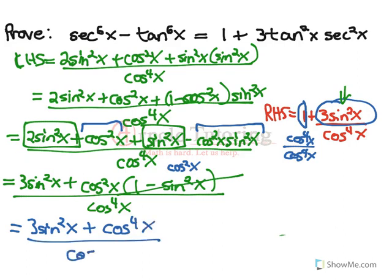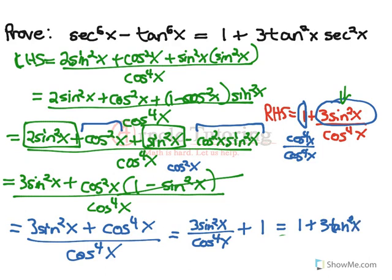Now we can break these up over their individual, each term over the denominator. So we've got 3sin²x over cos⁴x plus cos⁴x over cos⁴x is 1. And there we go. We have 1 plus 3sin²x over cos⁴x, which equals the right-hand side.